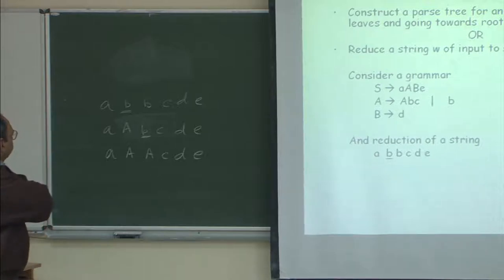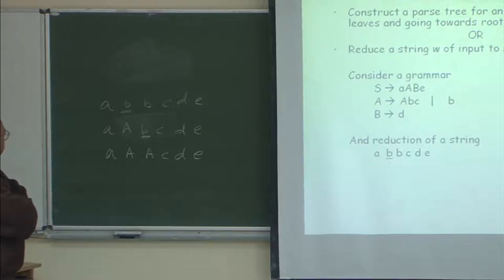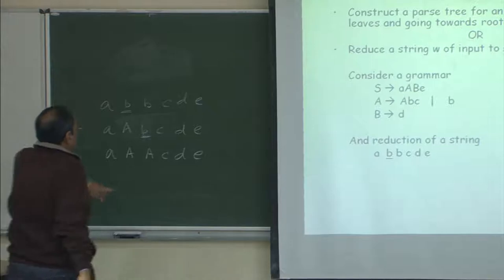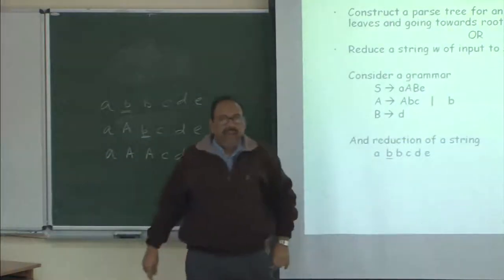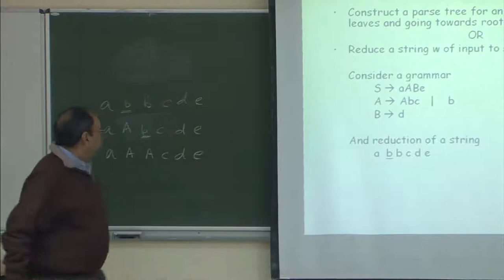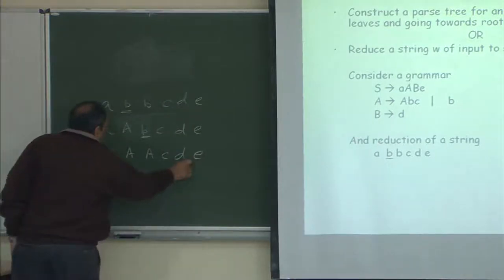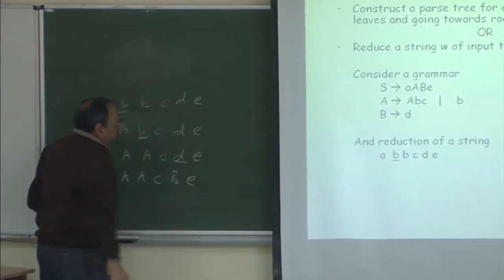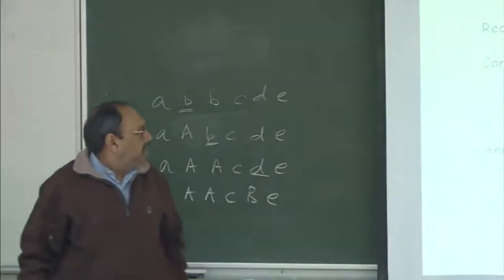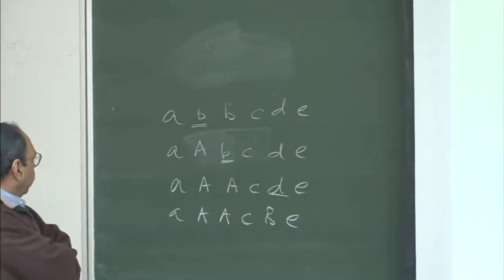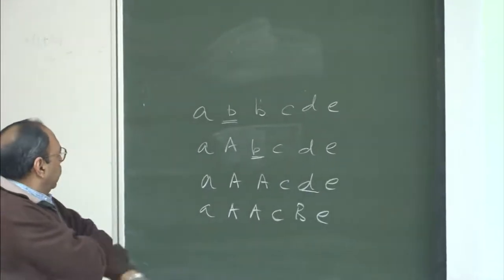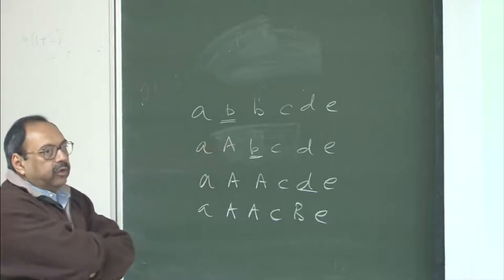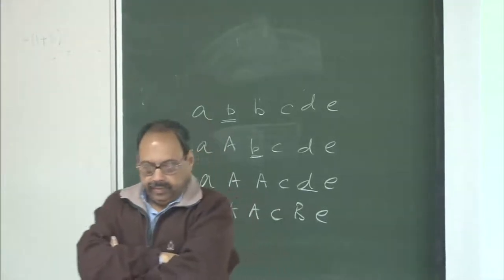Let us try to see if I can find a pattern on the right-hand side. I notice A, A, C, B, B matches, so this right-hand side can match a production. If I replace that, I reach a new configuration. Now, how do I proceed from this point? Can you find a pattern which matches the right-hand side of one of the productions? No.